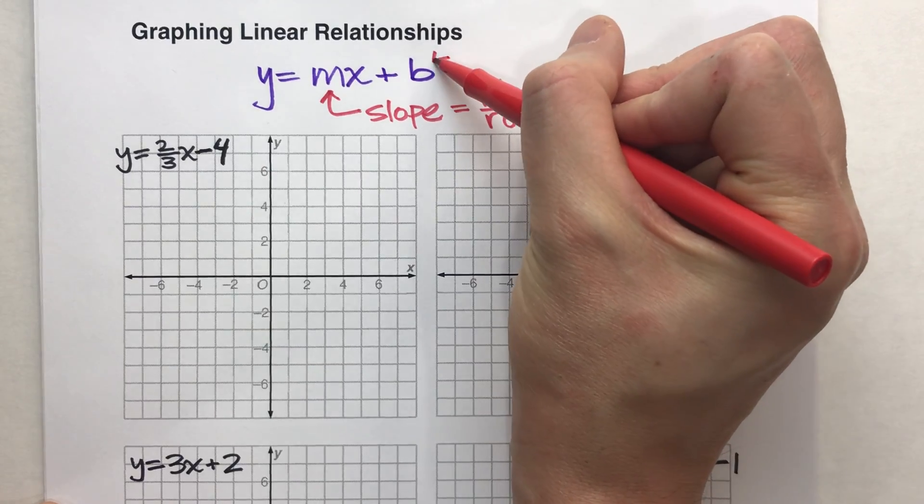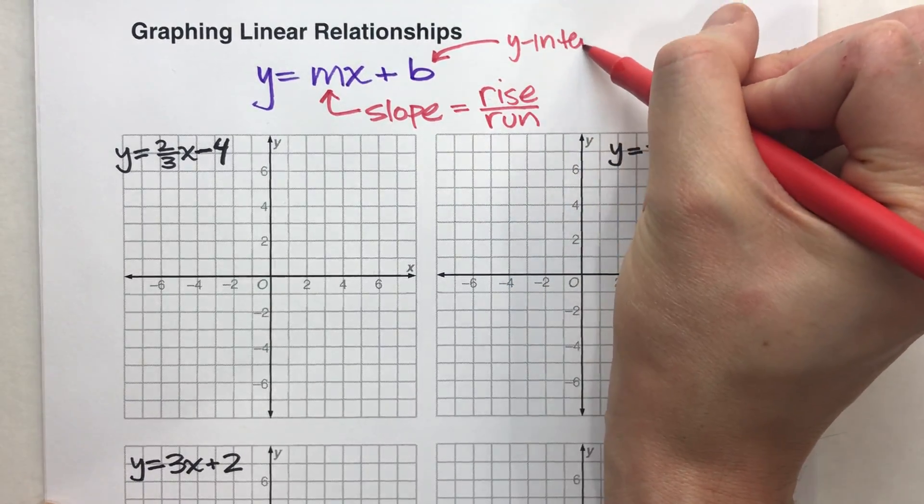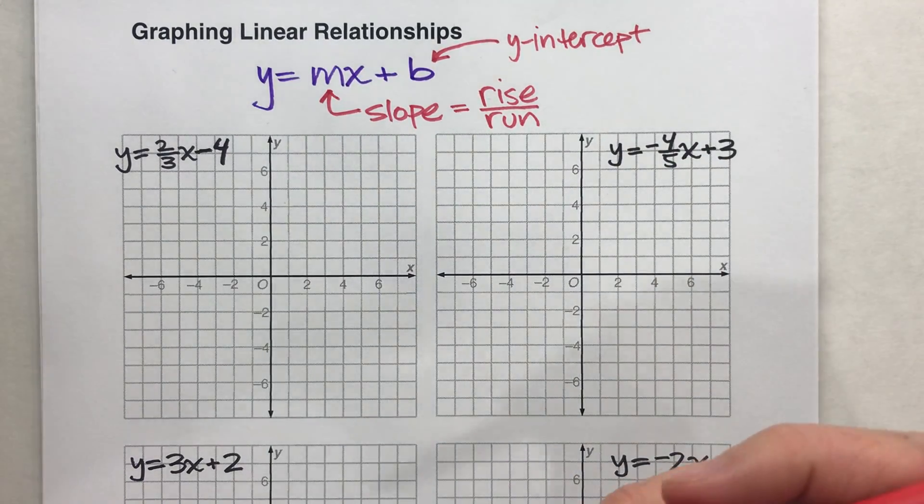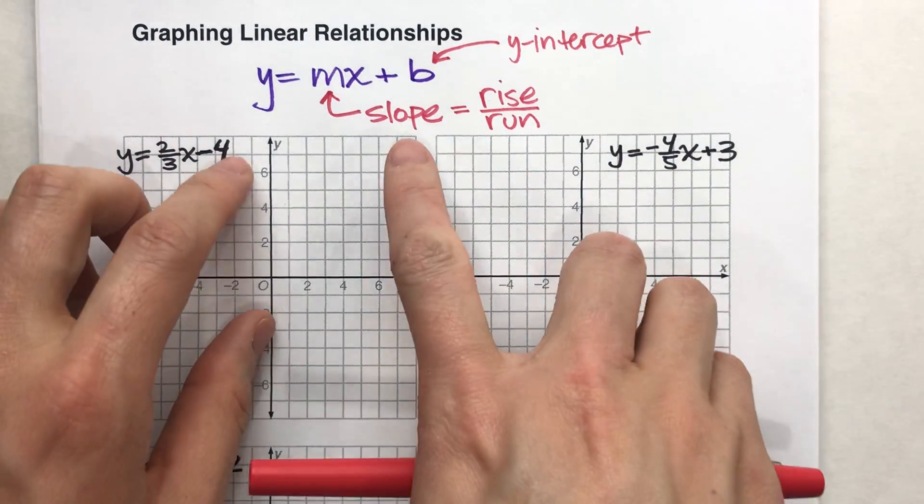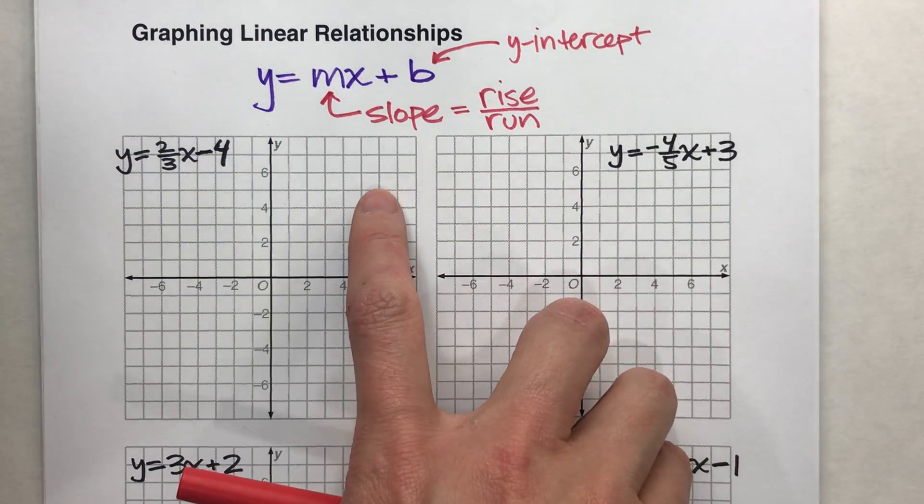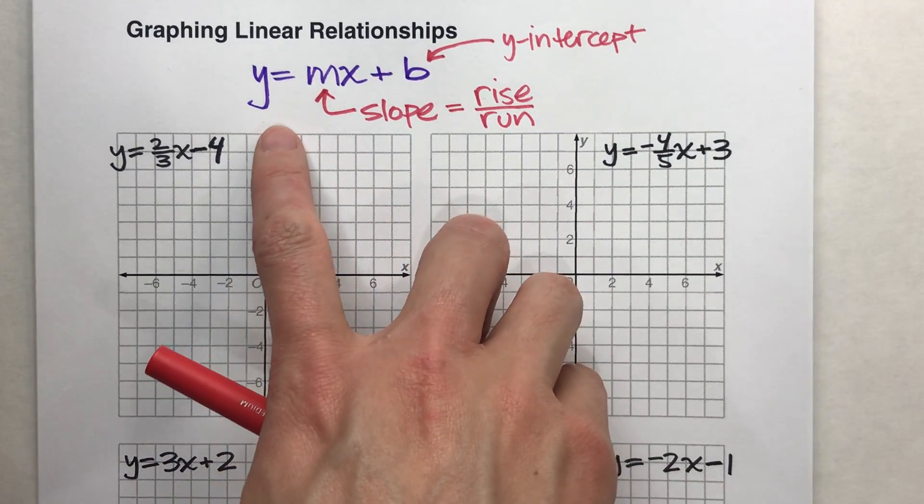Now, the number on the end, this b, is the y-intercept. What that tells you is where does your graph cross the y-axis. But every equation is going to have a y and x in there. It's just these numbers, the slope and the y-intercept, that are going to be different for each one. And that's going to tell us what our graph looks like.